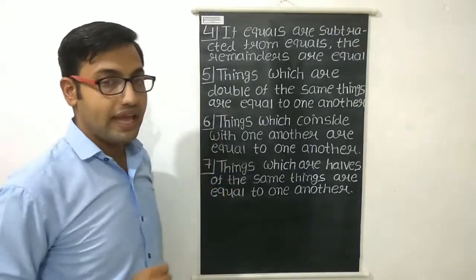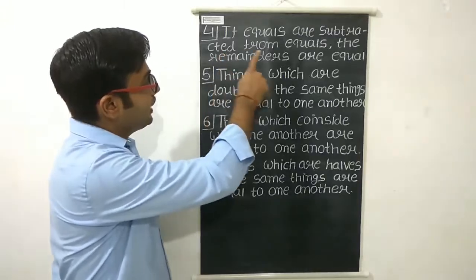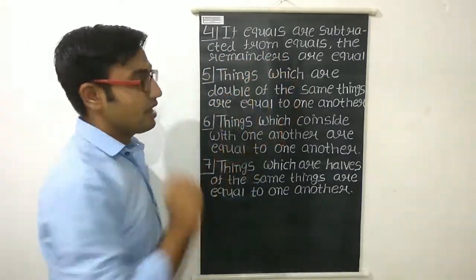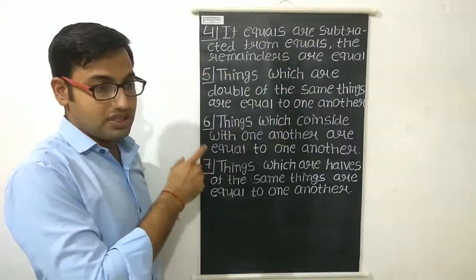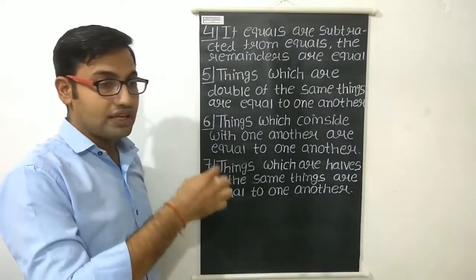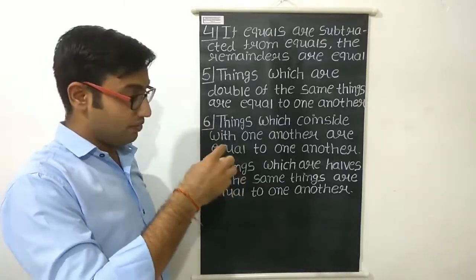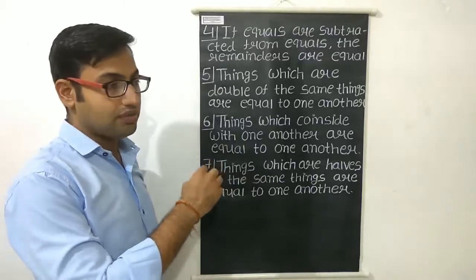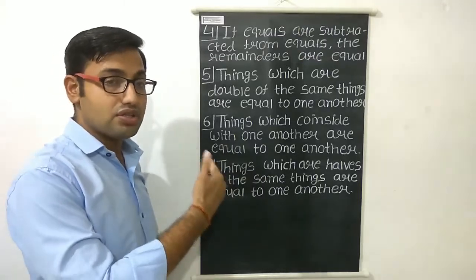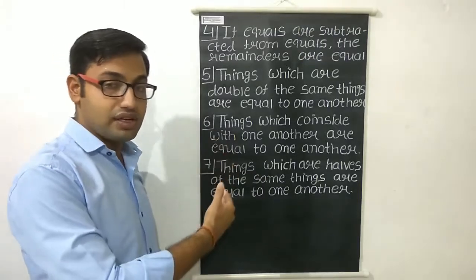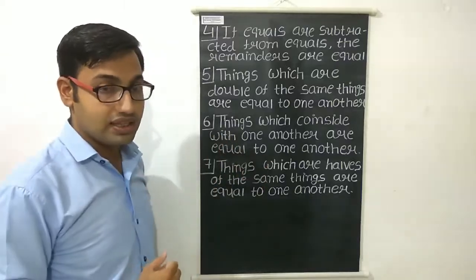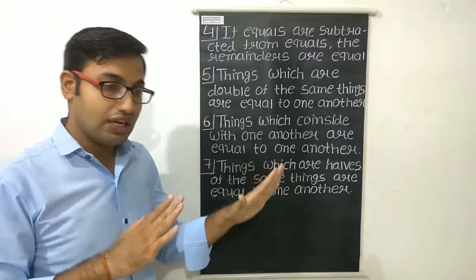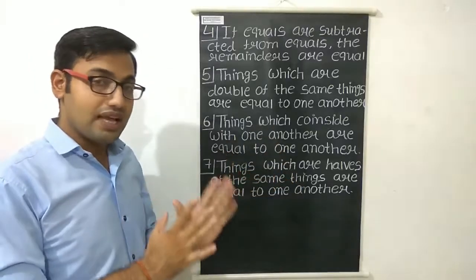The fourth axiom is: if equals are subtracted from equals, the remainders are equal. This is also the same principle we used while solving linear equations in one variable — whenever you subtract something from the left-hand side, you must subtract that same value from the right-hand side, so the equality remains as it is.